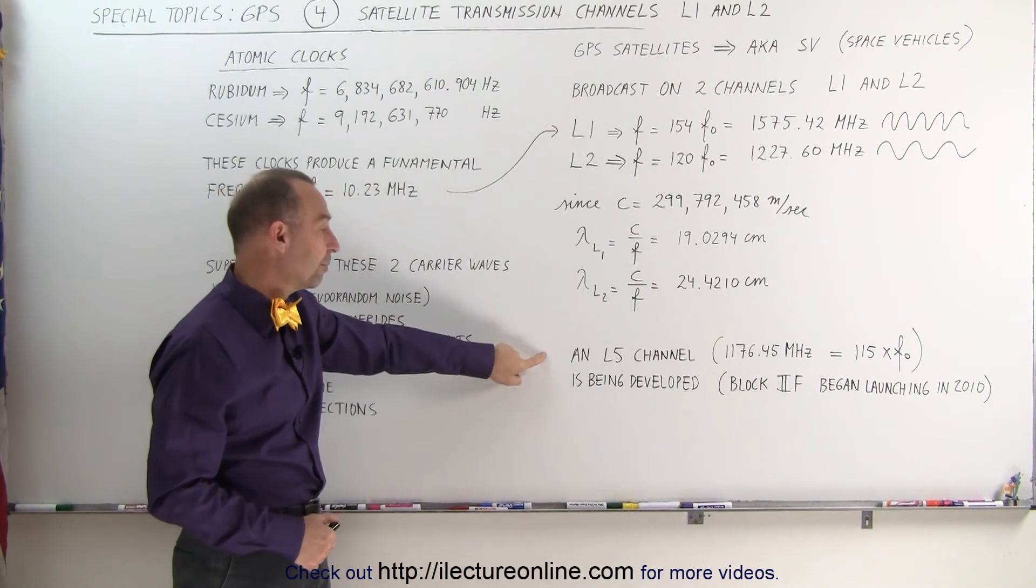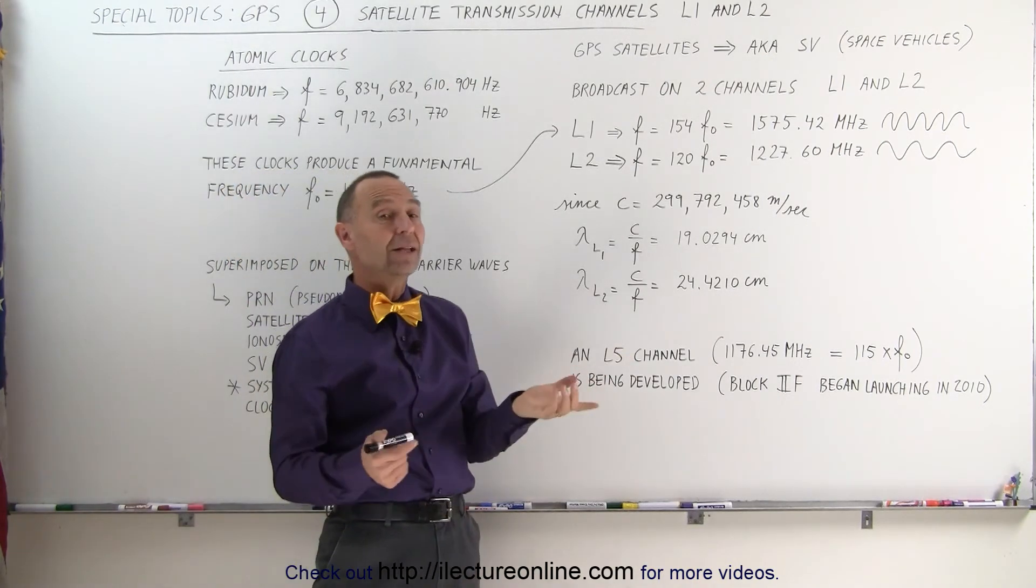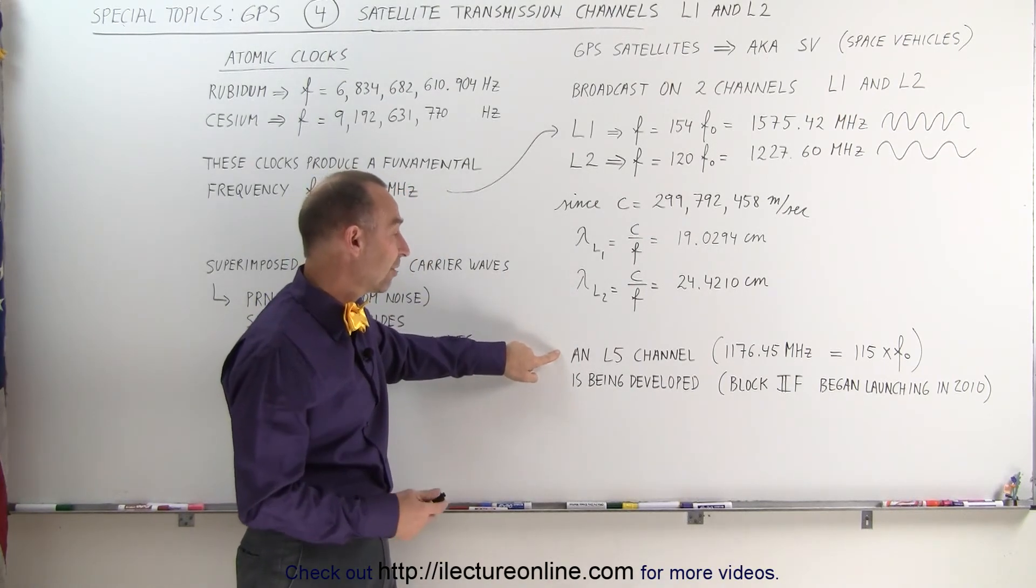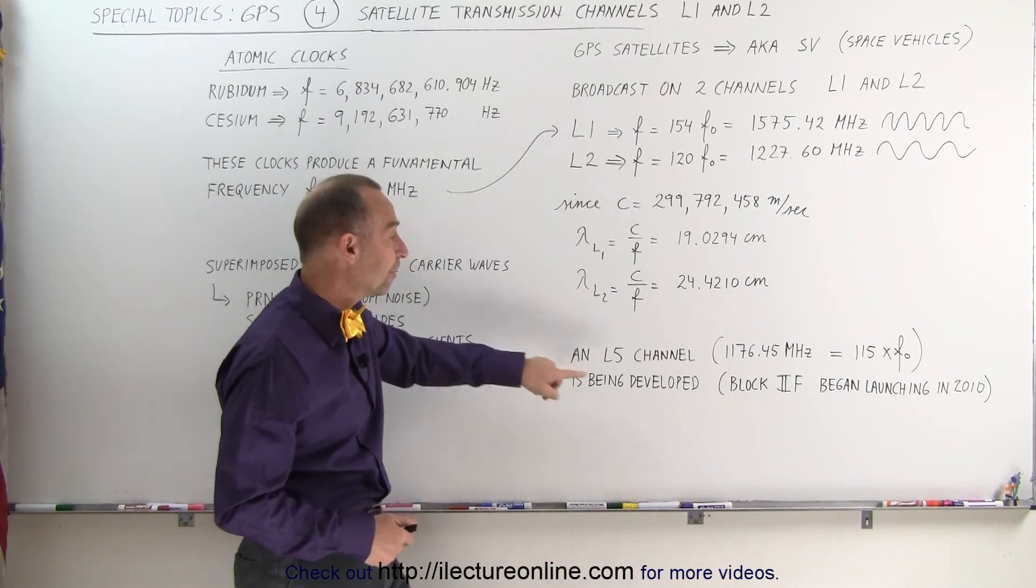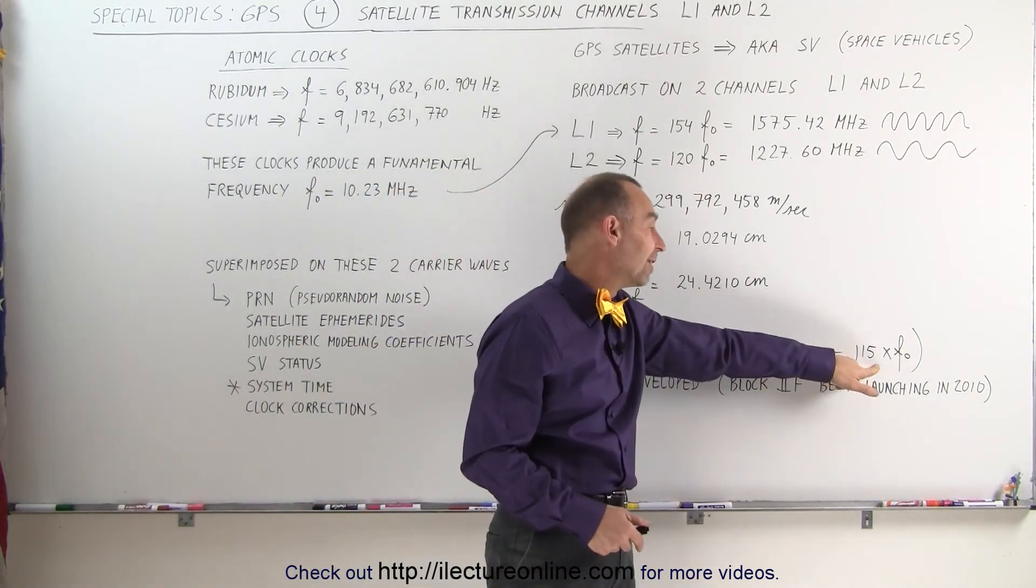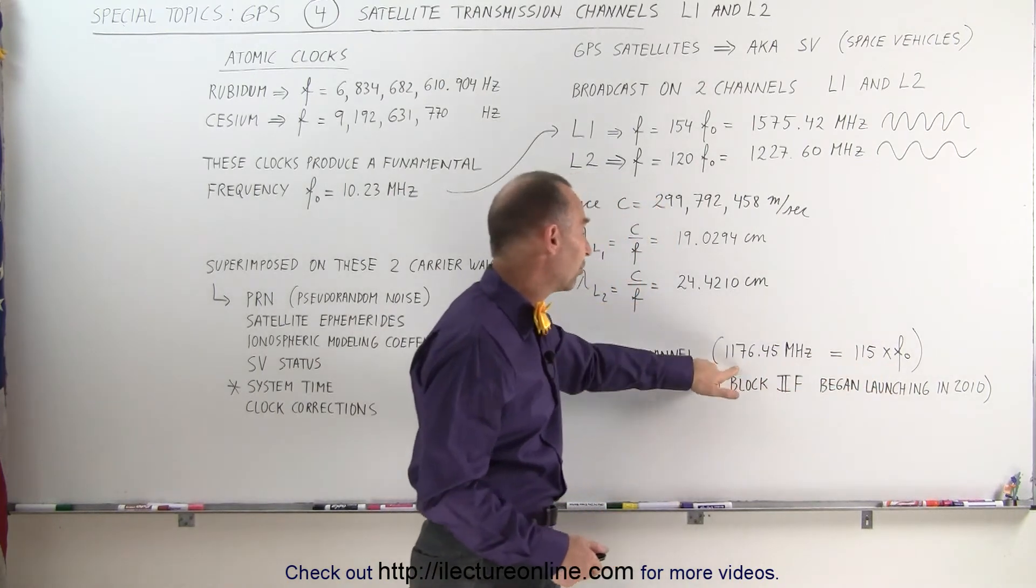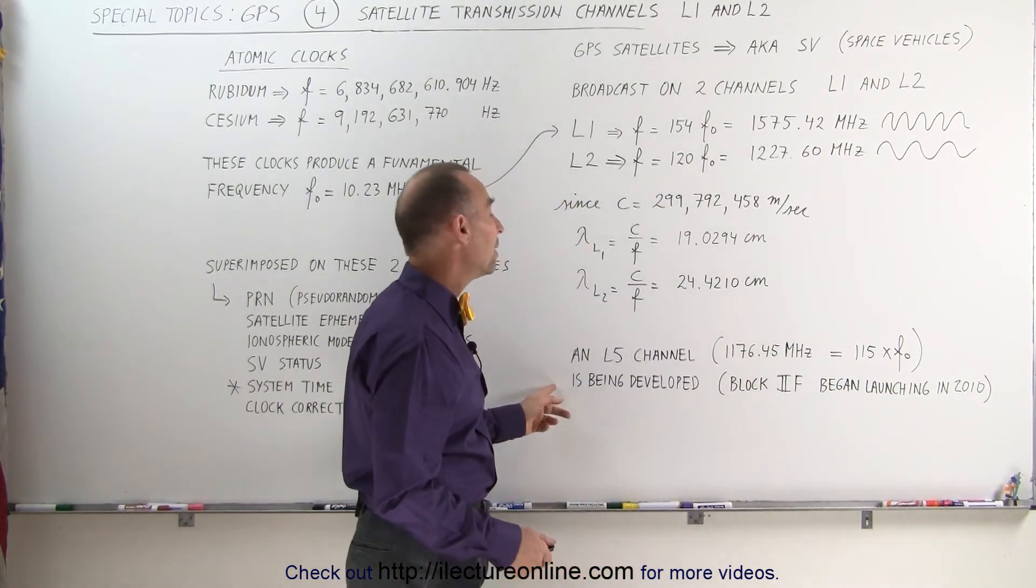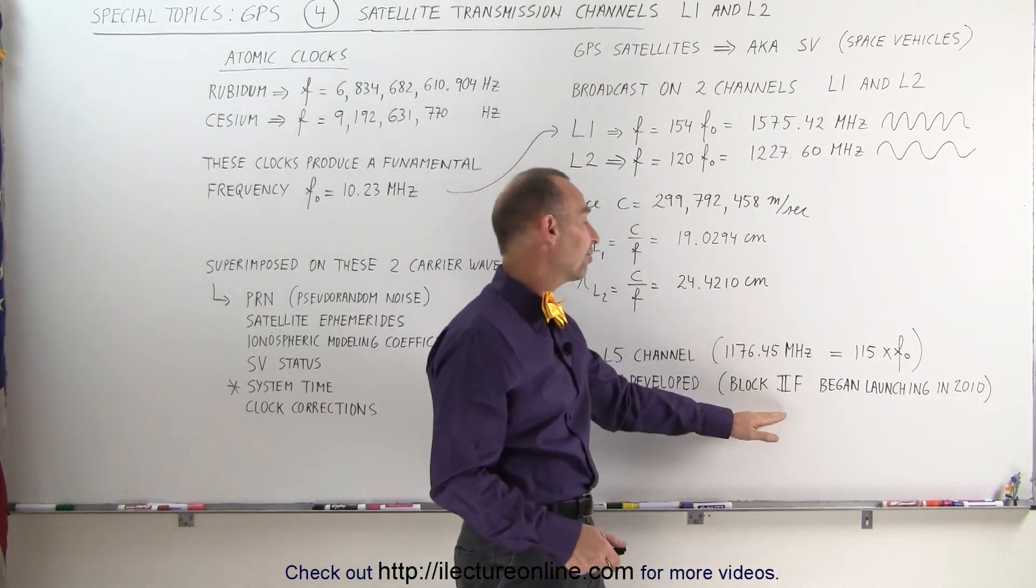As we've discussed before, an L5 channel is being added. The L5 channel is going to improve the non-military use of the GPS satellite for general use of the population. That particular carrier frequency is at 115 times the base frequency, which puts it at 1176.45 megahertz, and that's currently being developed with the Block II F satellites.